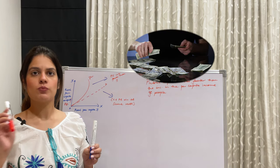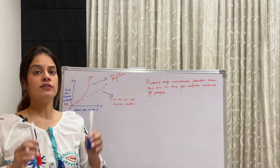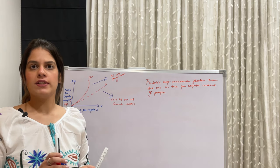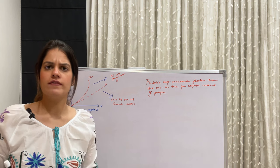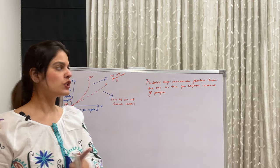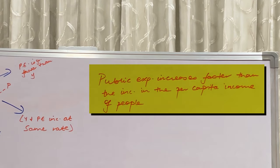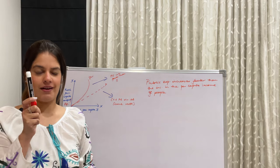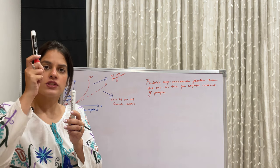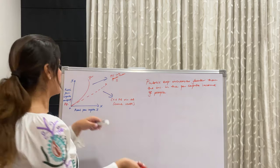We know both national income and public expenditure hold a positive relationship — as income increases, public expenditure also increases. But what is the rate? Are they increasing at the same rate? The key insight is that public expenditure increases faster than per capita income. So if income takes five years to reach a certain level, public expenditure will reach a comparable level faster.